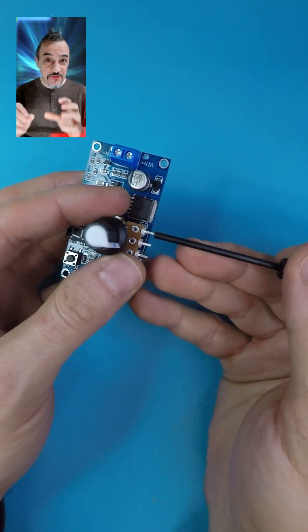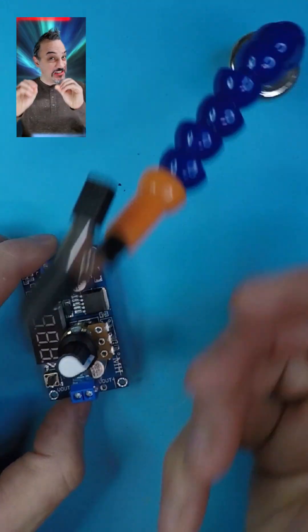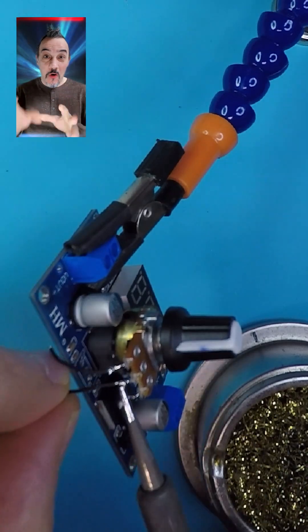I then use a 9-volt battery enclosure and solder its leads to the input of the converter.